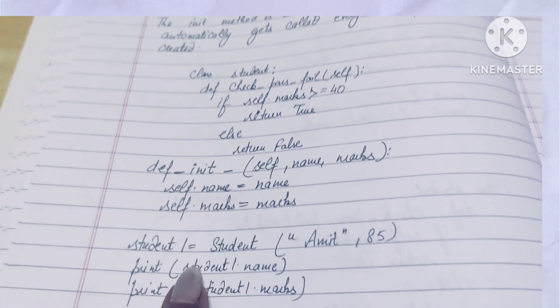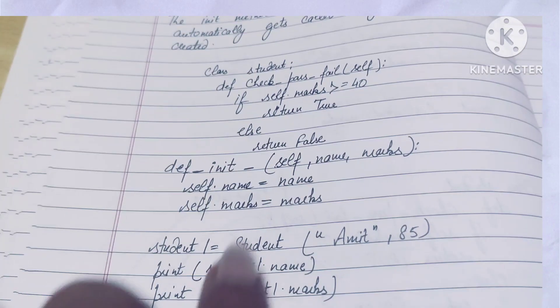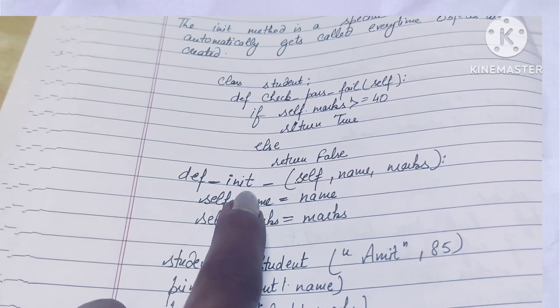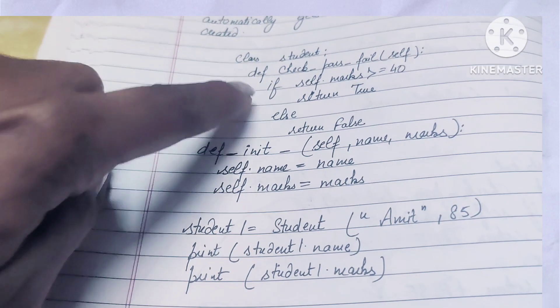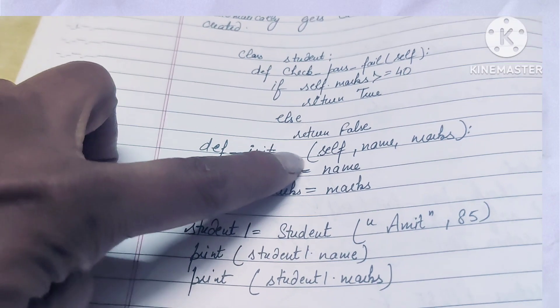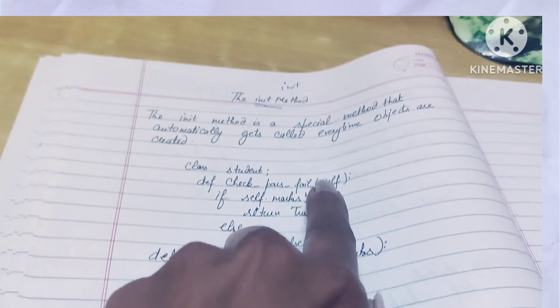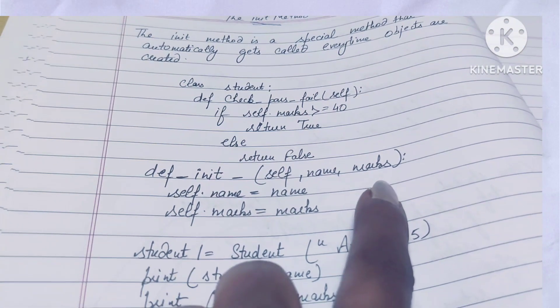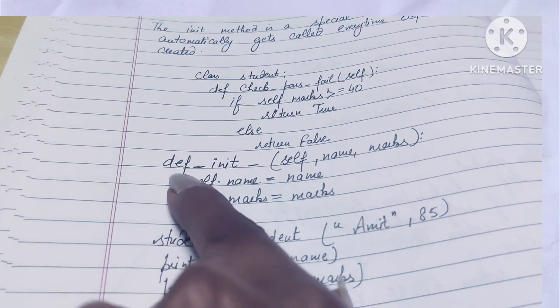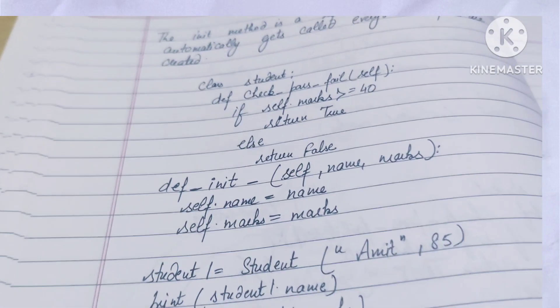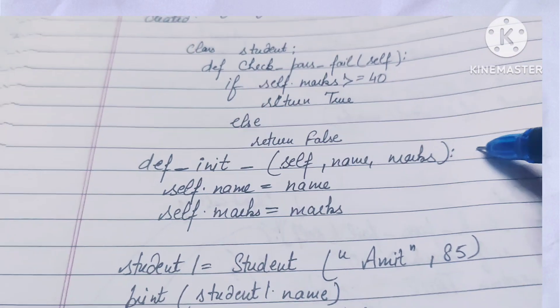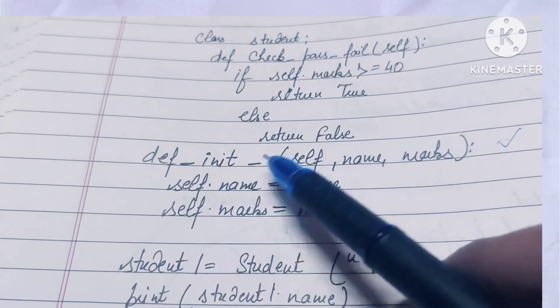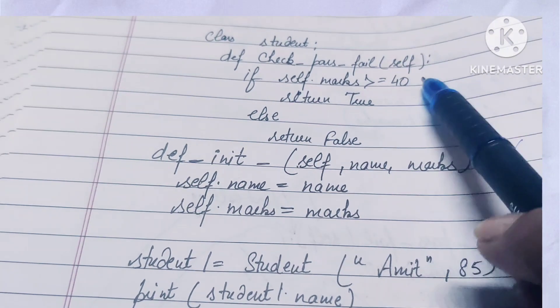Now let's see how the init method is used. We have defined underscore underscore init underscore underscore, with self, then name, then marks.